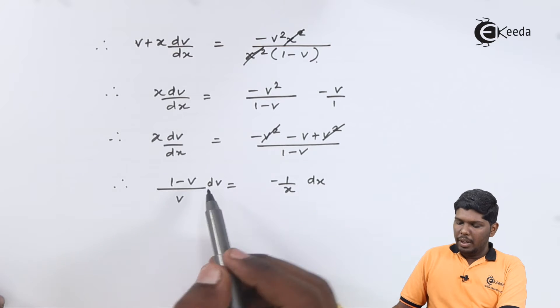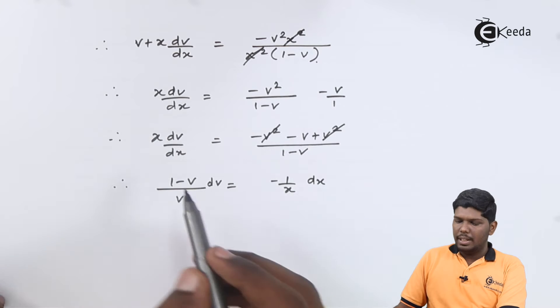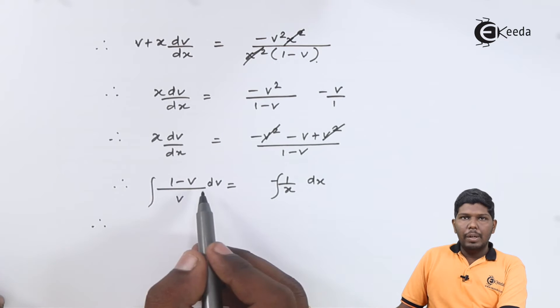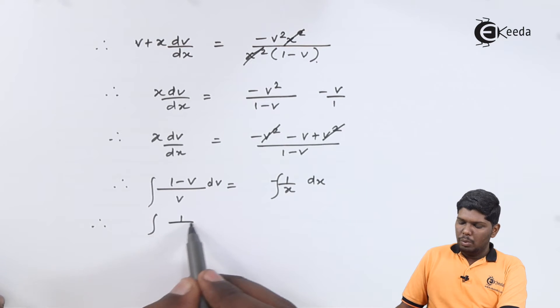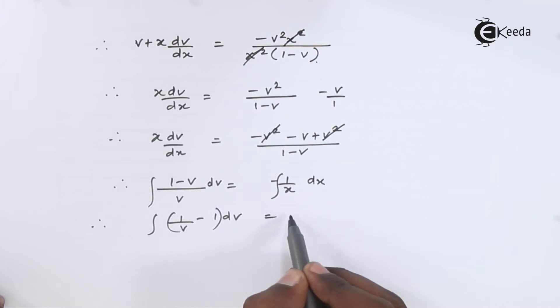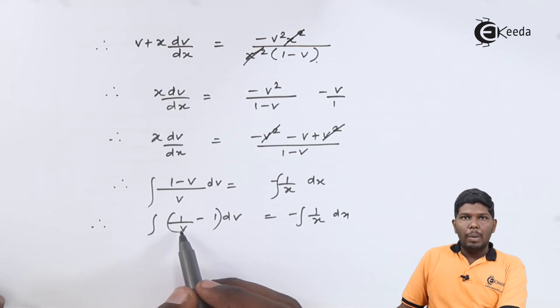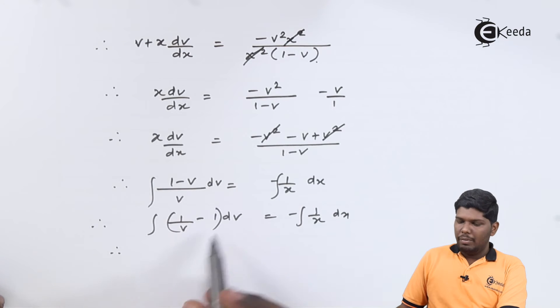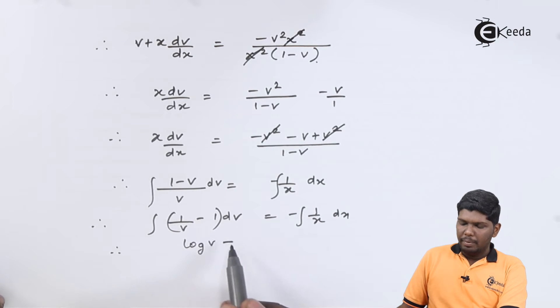we have 1 minus v upon v dv is equal to minus 1 upon x dx. So let us integrate on both sides. Here we will be separated and that will give you 1 by v minus 1 is equal to 1 by x. Now integration of 1 by v will be log v, integration of 1 dv will give you v.